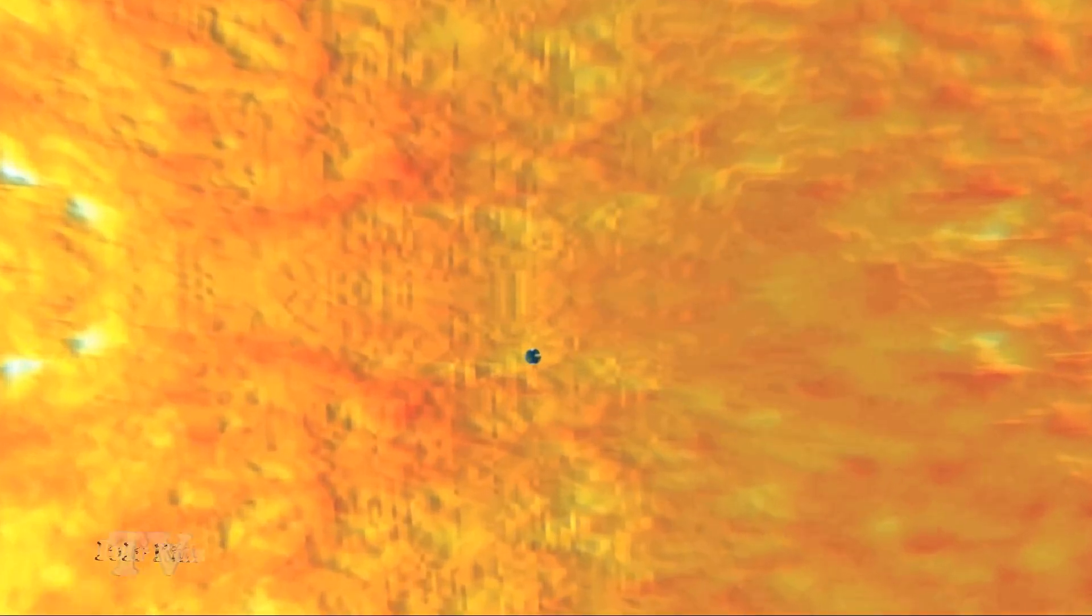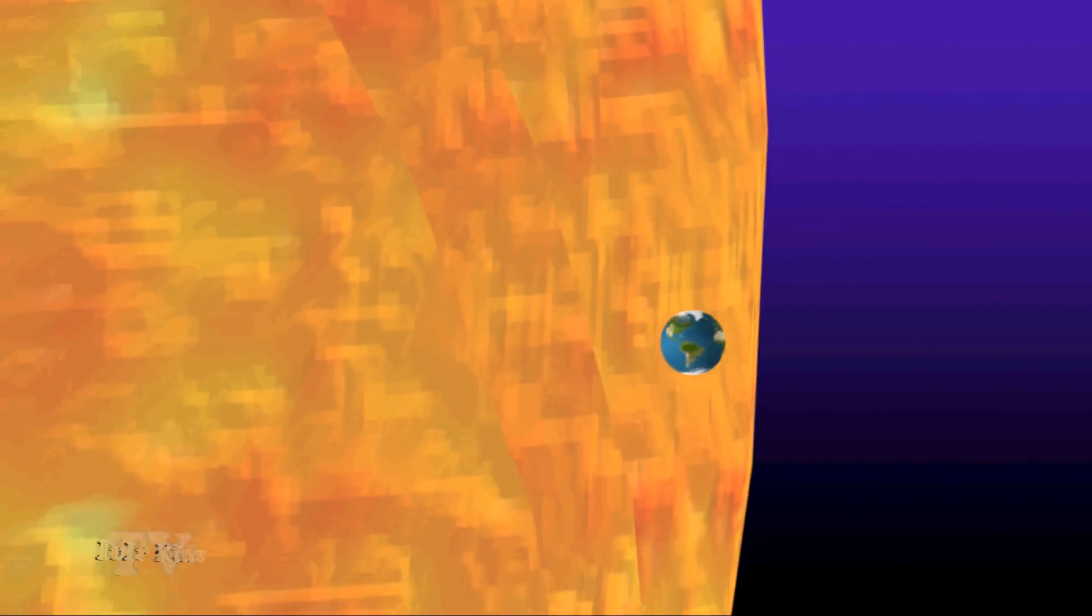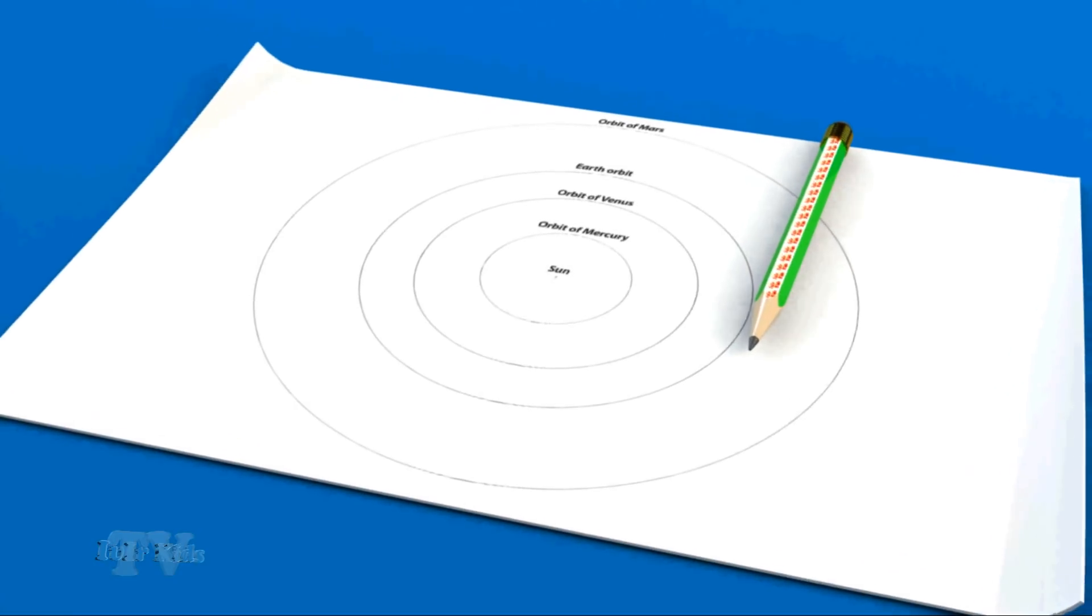Among them there is one unique planet, our Earth. For now, the only known planet on which there's life. The planets revolve around the Sun in their orbits. The nearest to the Sun is the orbit of Mercury, the farthest is the orbit of Pluto.